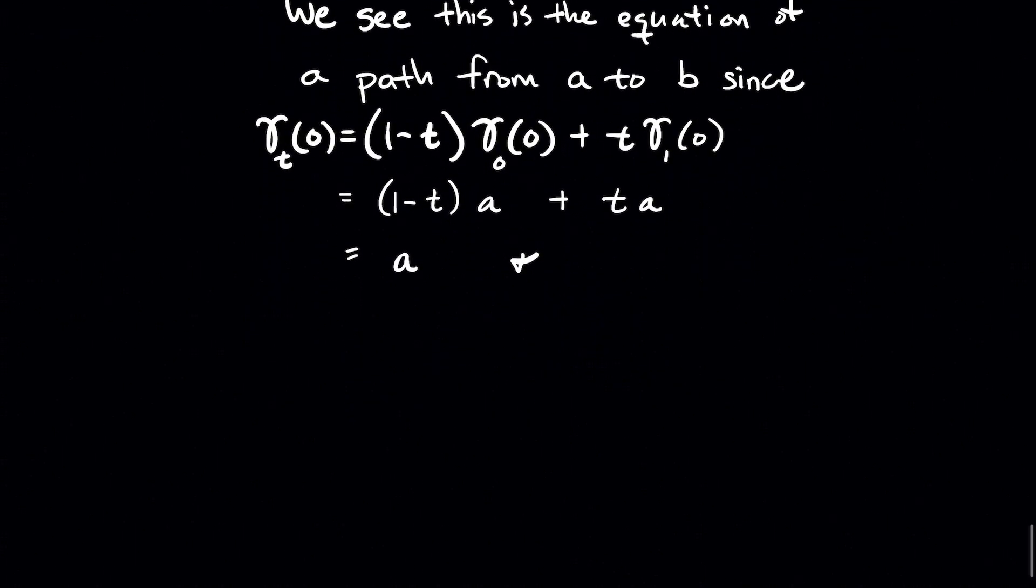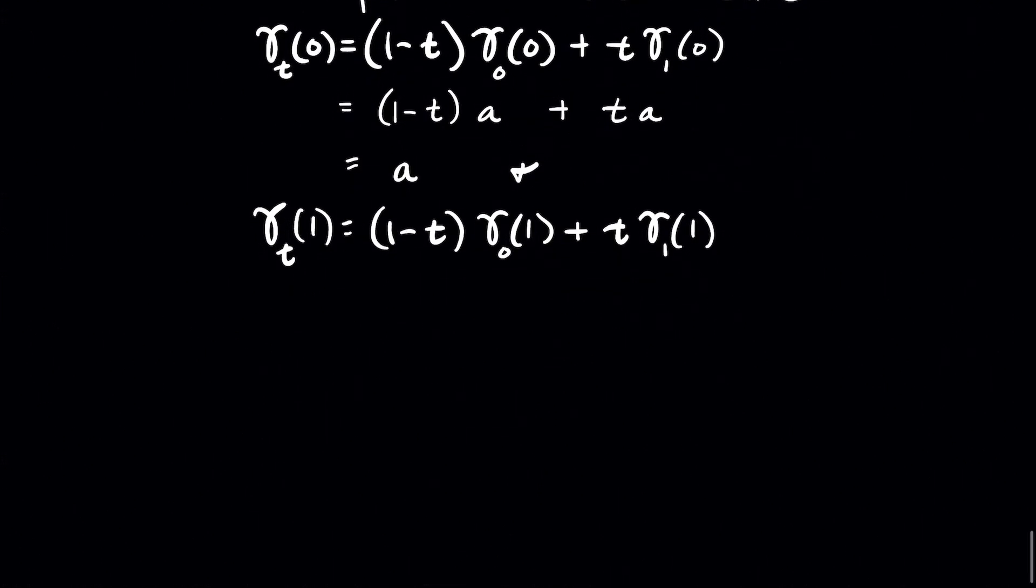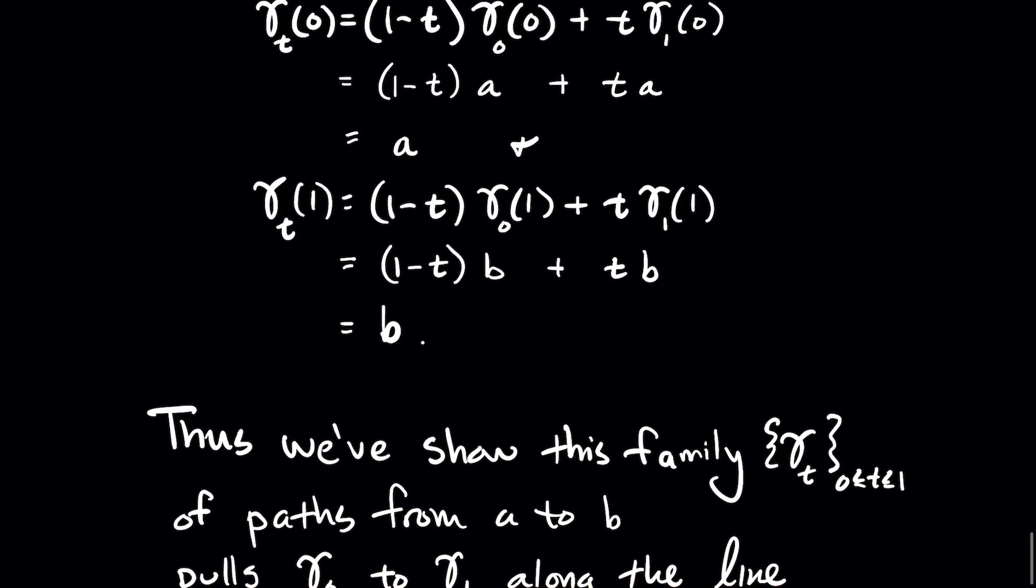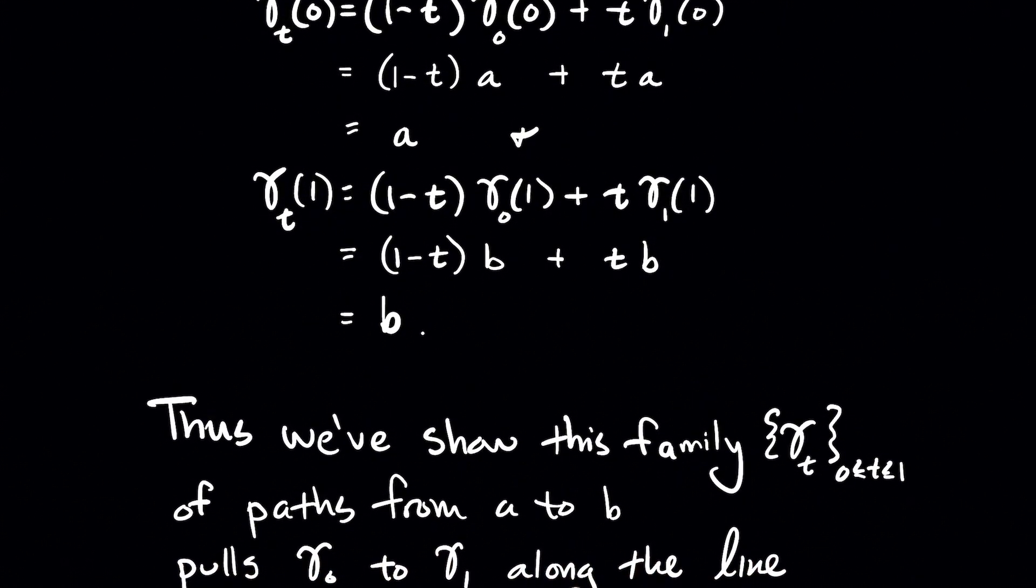And we also need to make sure that when we plug one in for s, that we get b. And so let's just do that algebra very quickly. Remember gamma naught of one, gamma naught ends at b, and gamma one ends at b. So we will substitute b in for both of those. And when we distribute and do that algebra, we get b. So we've verified that gamma t is in fact a path from a to b.